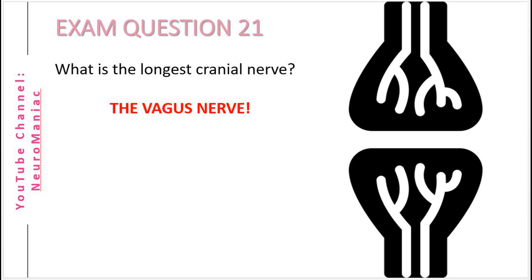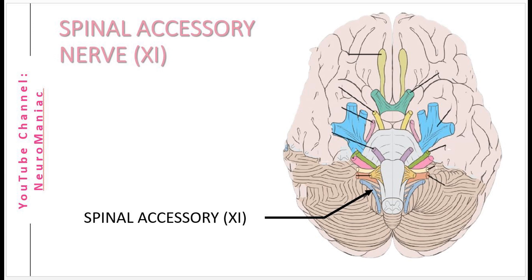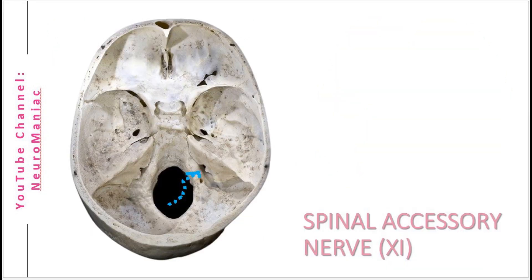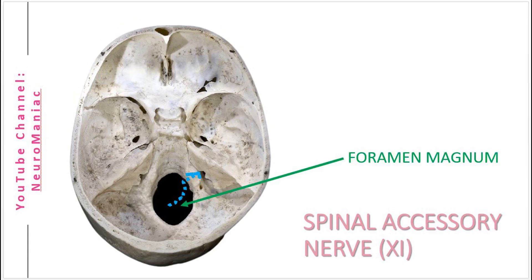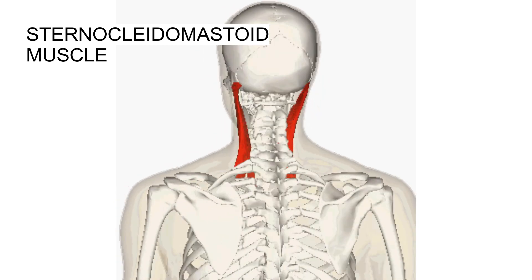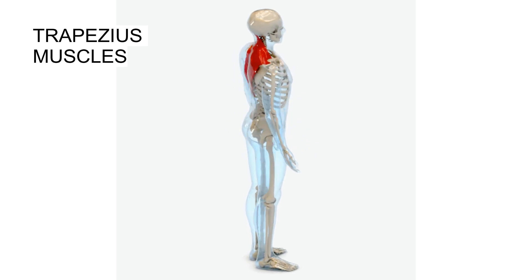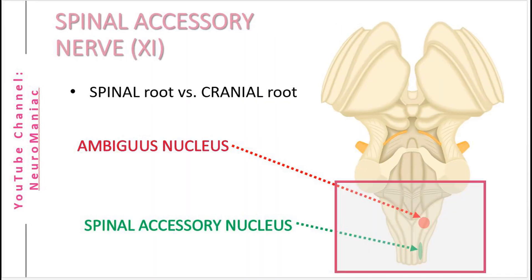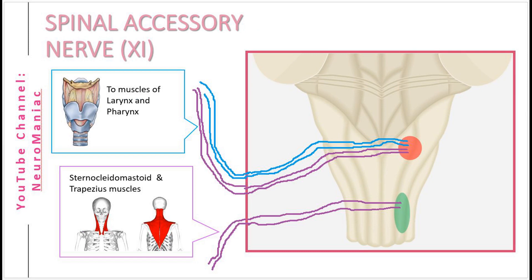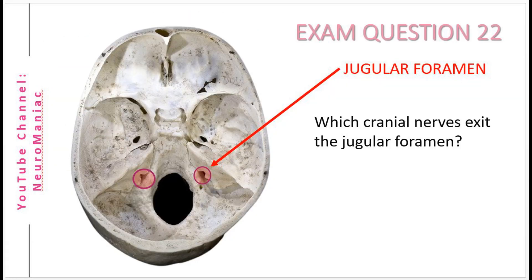Moving on to the fairly simple cranial nerve number 11, the spinal accessory. This nerve originates from the spinal accessory nucleus and nucleus ambiguus. It emerges from the medulla region and enters the posterior cranial fossa via the foramen magnum, then exits the cranial cavity via the jugular foramen and descends down the neck. The spinal accessory nerve contains efferent nerve fibres, meaning it has a motor function. Specifically, it innervates the sternocleidomastoid muscle to allow the head to turn and nod, as well as the trapezius muscle for shoulder elevation. The accessory nerve has two parts — spinal and cranial roots. The cranial roots combine with the vagus nerve to innervate the larynx and pharynx, whereas the spinal part contains fibres that innervate the two muscles previously mentioned.